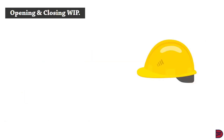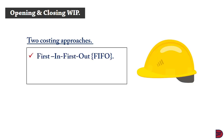Let's now look at opening and closing work in progress. In the previous discussion, we concentrated on inputs that were not fully completed by the close of the period, and we assumed there were no work in progress brought into the current year. Here, we are going to discuss a situation where a business is in a subsequent period, meaning the previous section had a closing work in progress which will come in as opening. There will be two approaches: first in first out (FIFO) and the weighted average cost.